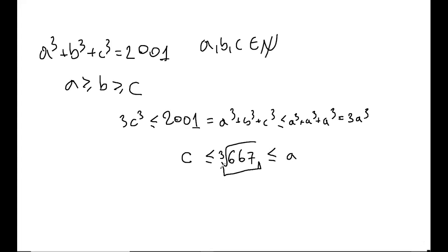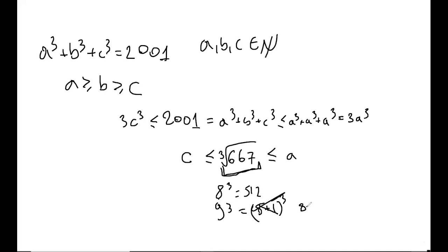Now we must find what integers are around this cube root of 667. We know 8³ = 512 — this is something you know when you memorize powers of 2. And 9³: that's 81 times 9, which is 729. So 9³ = 729 > 667, which gives us that c ≤ 8, and a ≥ 9.